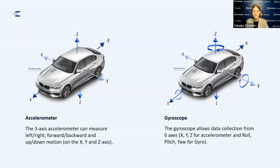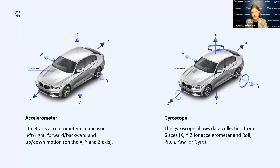In addition to measuring motion on the X, Y, and Z axis just like an accelerometer, the gyroscope includes rotational data of those axes, capturing roll, pitch, and yaw. This means it can show how a vehicle tilts, turns during movement, or leans. So in combination with the accelerometer and gyroscope, we get a more complete view of vehicle movement.